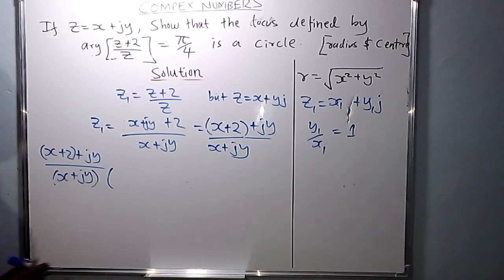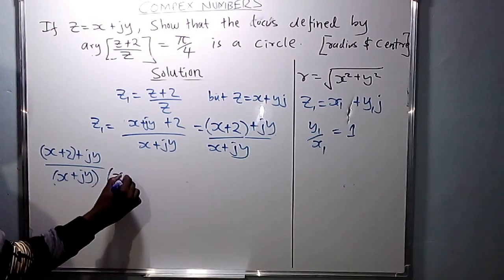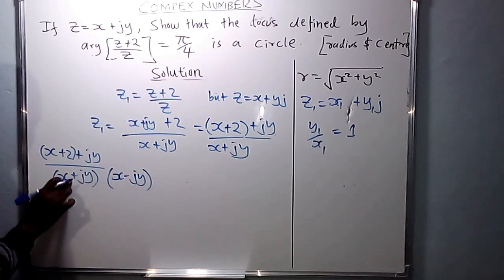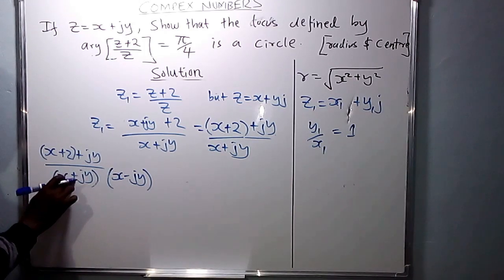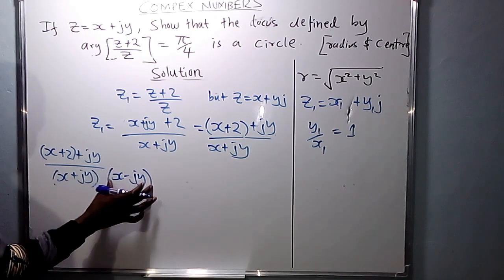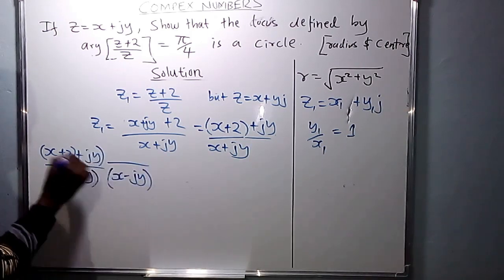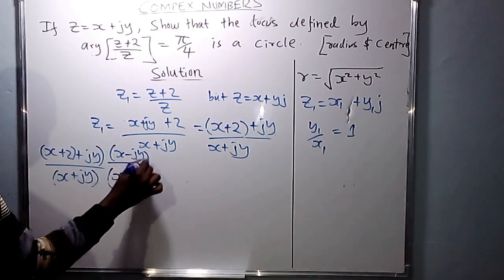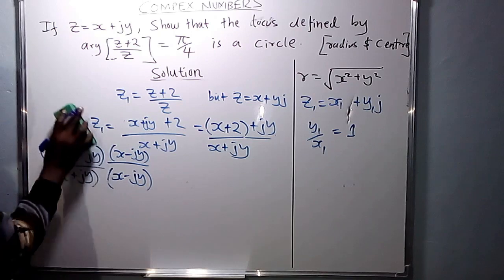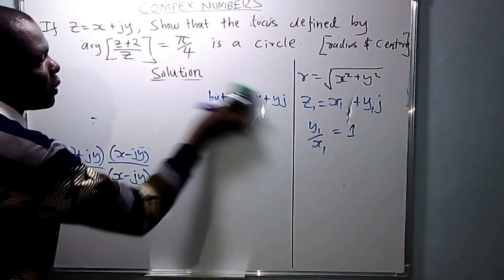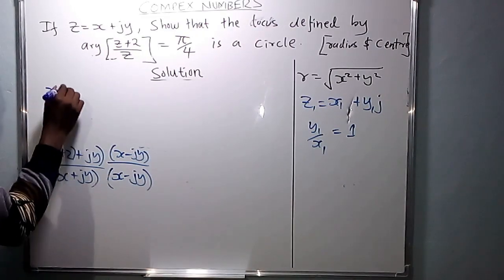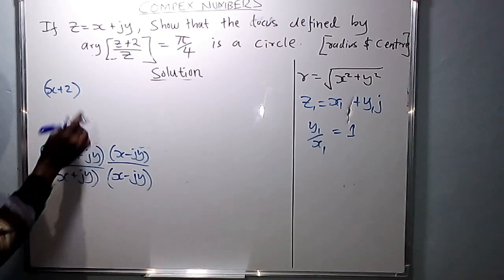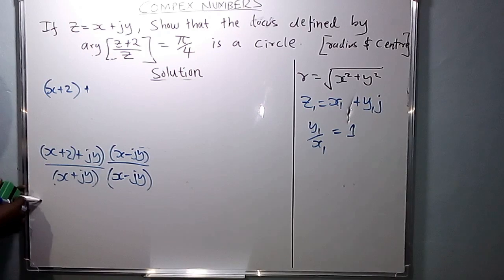We multiply numerator and denominator by the complex conjugate. The conjugate of (X + JY) is (X − JY). You do the same in the numerator to balance the equation. In the denominator, it becomes a difference of two squares, giving X squared plus Y squared, since J squared is negative 1.